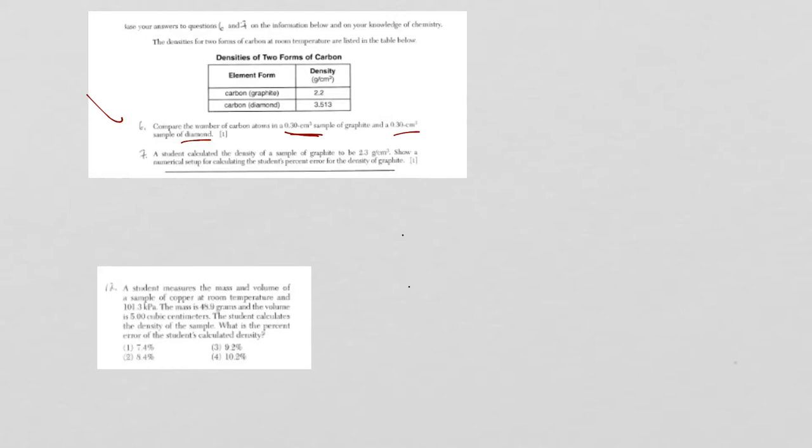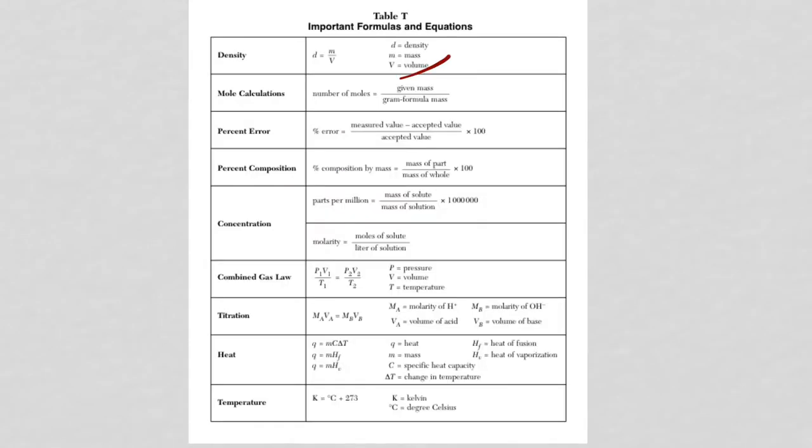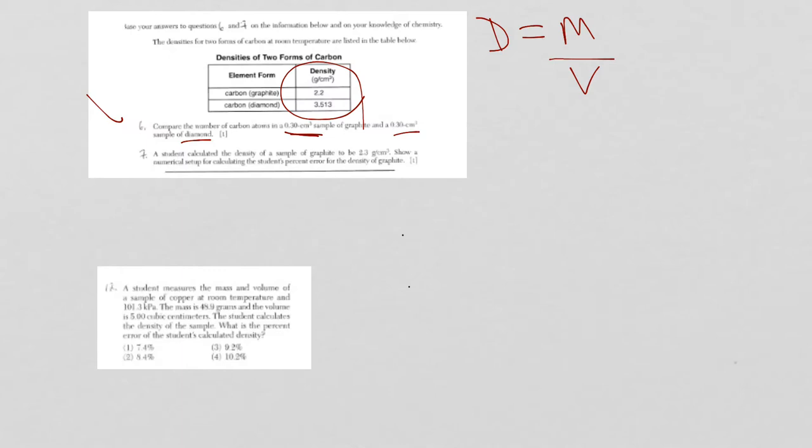Well, the number of carbon atoms is going to vary based, then, if the volume is the same, right, on the densities. So, the Regents likes to sneak in the density equation, d is equal to m over v. It is on the reference table, if you need it. I also want to point out to you on reference table S, there are densities for elements.